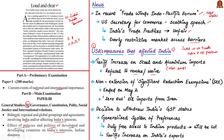Next is regarding the Significant Reduction Exemptions that USA gave to certain countries with regards to the import of oil from Iran. It is basically a waiver given to few countries, including India, post the USA's sanctions on Iran. Under this waiver, the countries have to reduce their oil imports from Iran to zero or else they might face consequences. Iran is one of the leading suppliers of crude oil to India. This exemption ended on 2nd of May.